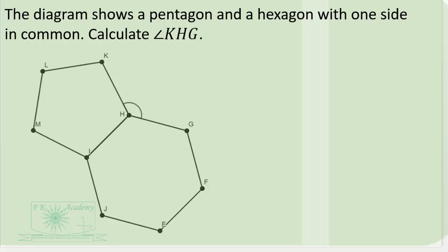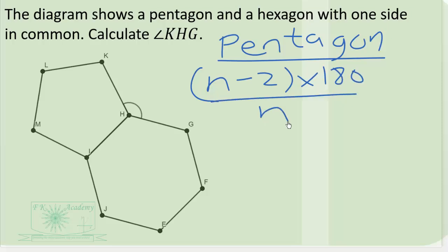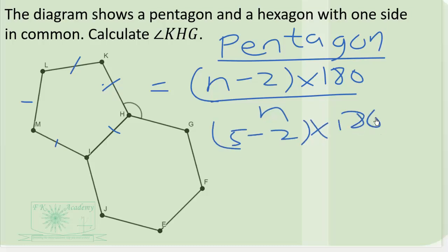Let us turn to question number 4. The diagram shows a pentagon and a hexagon with one side in common. Calculate angle KHG. We need to find the interior angle of each polygon. For the pentagon, each interior angle is given by (n minus 2) times 180 over n, where n equals 5. So we get 5 minus 2 times 180 divided by 5, which gives 3 times 180 over 5, equaling 108 degrees.